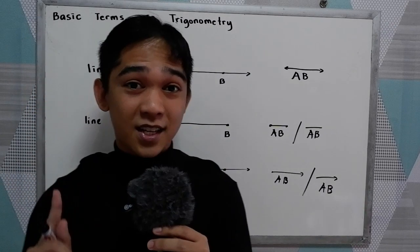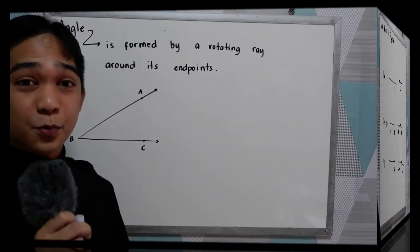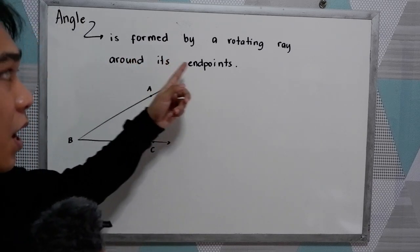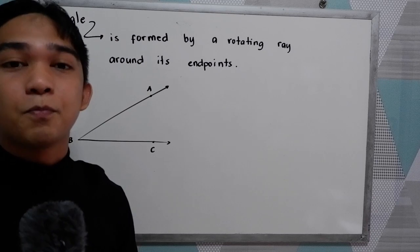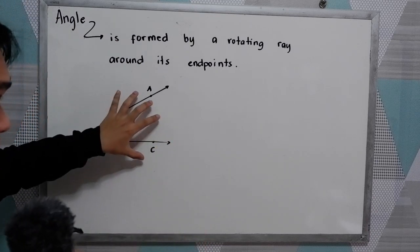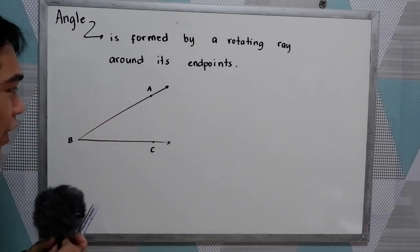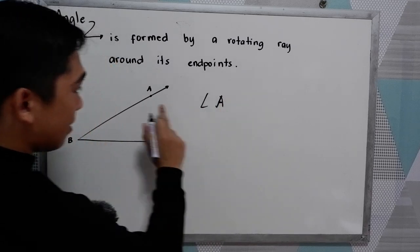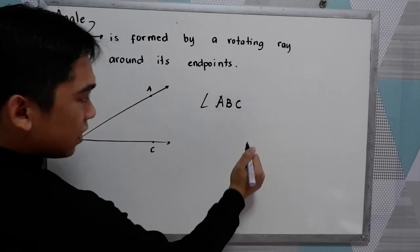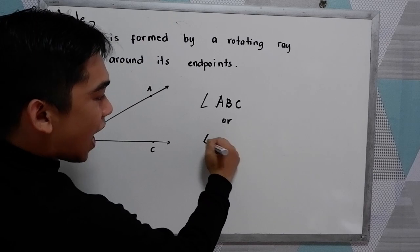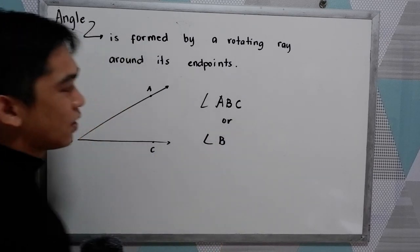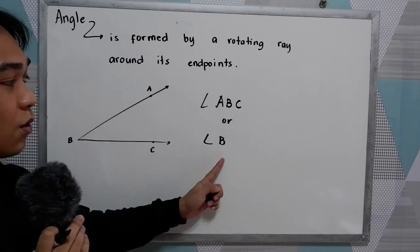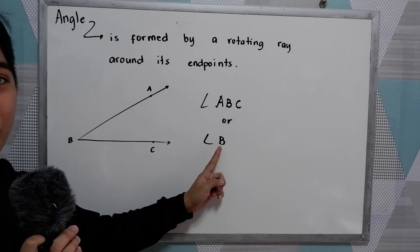Now let us proceed to another term, which is the angle. An angle is formed by a rotating ray around its endpoint. We can name this as angle ABC, or simply angle D. We can name it using three points or simply in capital letter, which is the vertex.